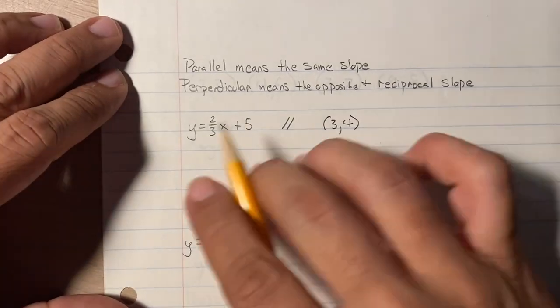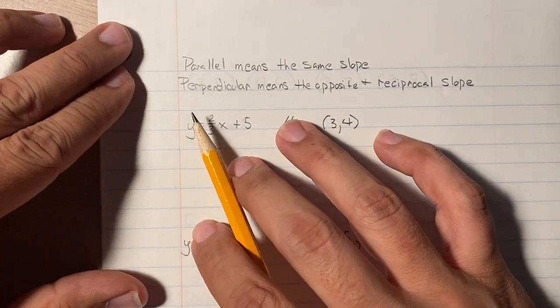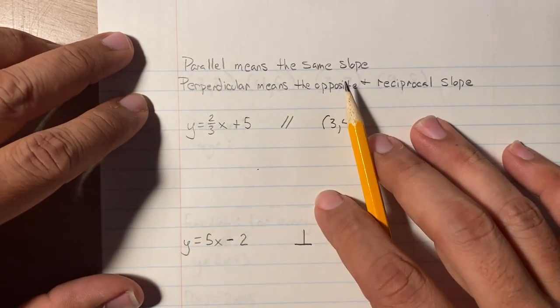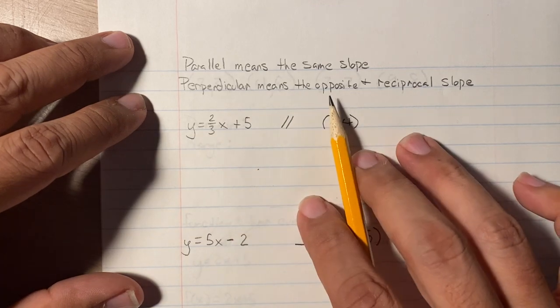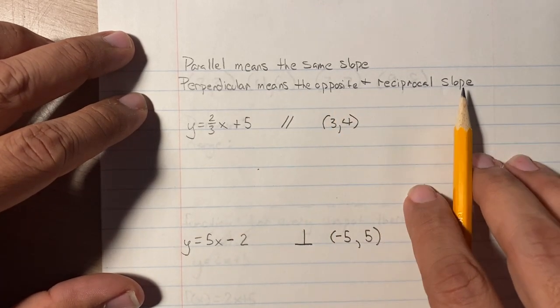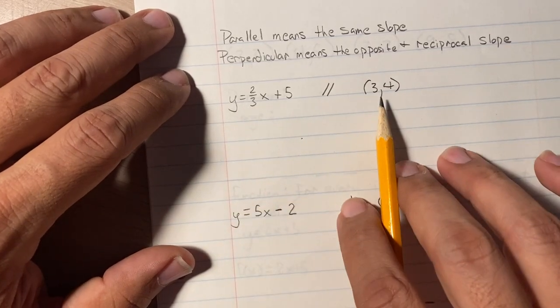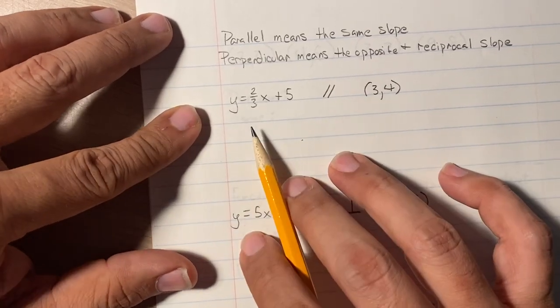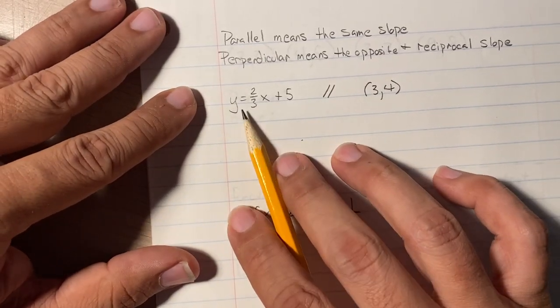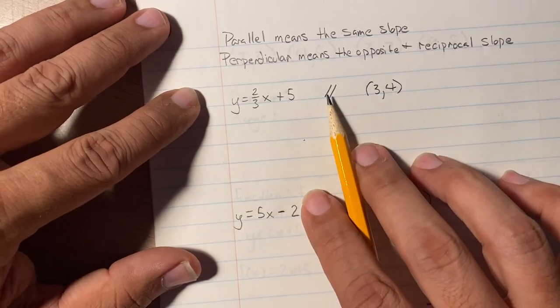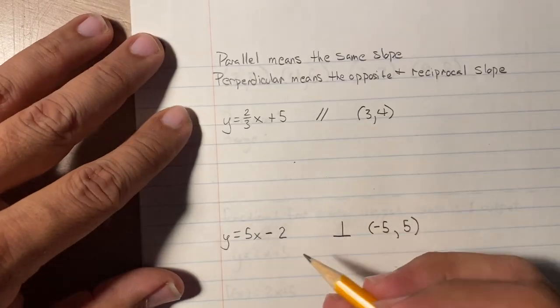Okay, so let's talk about parallel and perpendicular. Parallel lines means that they have the same slope. Perpendicular means that they have the opposite reciprocal slope. Okay, so let's do this one. So we're going to write a line that is parallel to this one, but goes through these two points. This is the shorthand for parallel, so let's solve it.